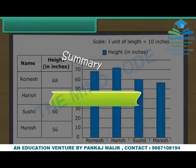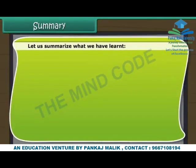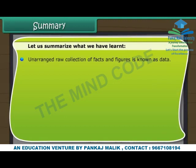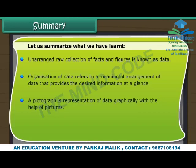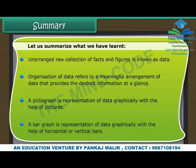Summary. Unarranged raw collection of facts and figures is known as data. Organization of data refers to a meaningful arrangement of data that provides the desired information at a glance. A pictograph is a representation of data graphically with the help of pictures. A bar graph is a representation of data graphically with the help of horizontal or vertical bars.